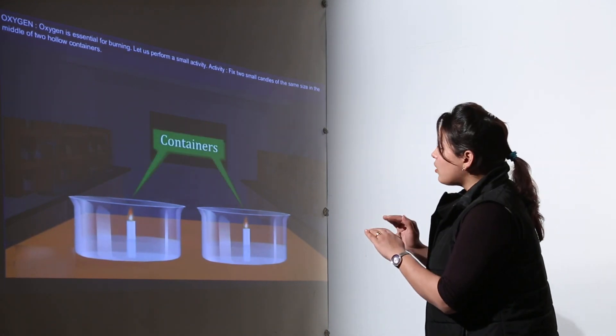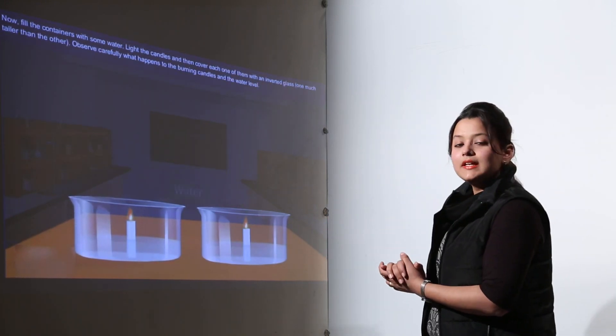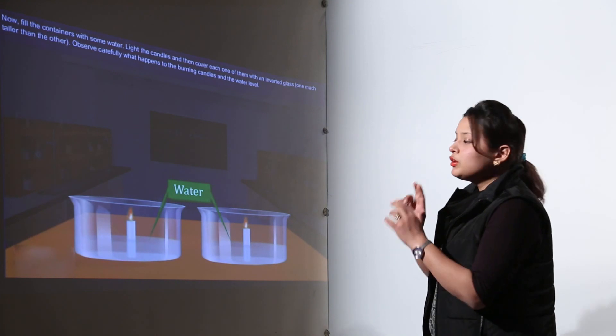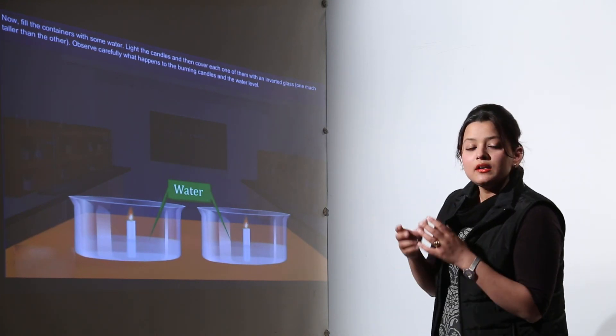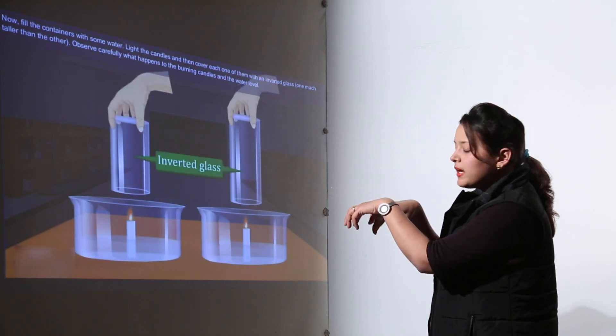Now these two hollow containers are filled with water. When you fill them with water, you can see they would appear like this. The next step is you would take two beakers and you will have to place those two beakers on the candles by inverting them.